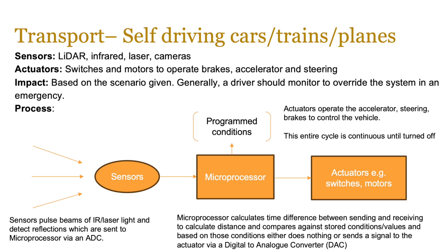If you've got multiple tracks in play then generally there's a driver around. The process is the same: sensors pulse beams of infrared or laser light and detect reflections, which are sent to the microprocessor via an ADC. The microprocessor calculates the time difference between sending and receiving to calculate distance, then compares it against stored conditions. Based on those conditions it either does nothing or sends a signal to the actuator via DAC. The actuators operate the accelerator, steering, and brakes — for example if the vehicle in front is too close, it'll slow down by reducing accelerator speed and controlling the braking system. The entire cycle is continuous until you turn the vehicle off.